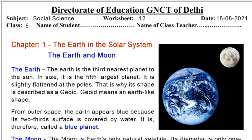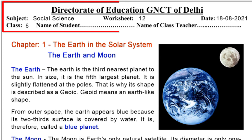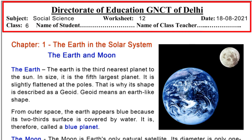Hello students, today we will solve Class 6 Social Science Worksheet number 12, dated 18th 2021. This worksheet is given by the Directorate of Education, Government of Delhi. Let's start. Chapter number one: The Earth in the Solar System.